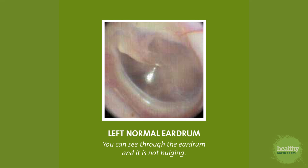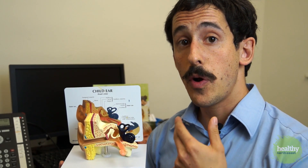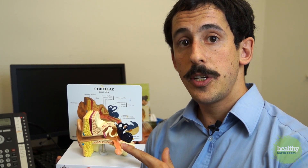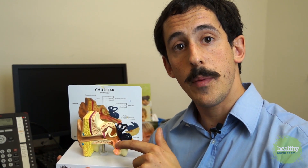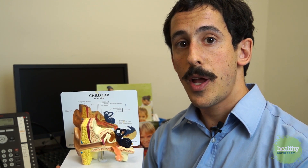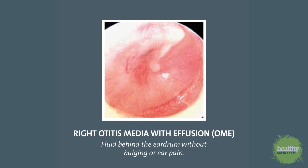Otitis media usually happens when a child gets a sore throat or a cold and the eustachian tube gets blocked. The eustachian tube usually allows fluid to drain from behind the eardrum into the throat or back into the nose. If the fluid gets trapped, the eardrum may bulge, and this is known as an effusion — otitis media with effusion, or OME.